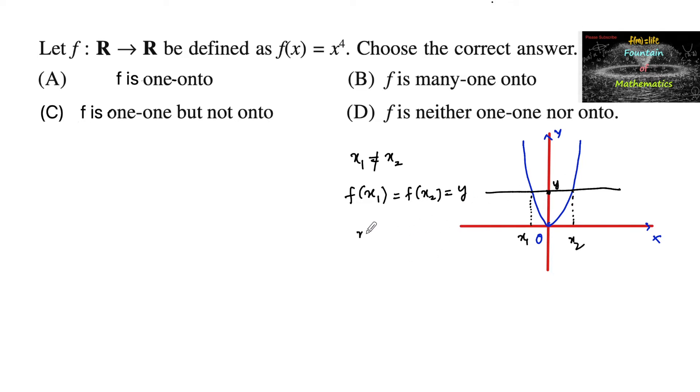Generally we can also verify by taking two real numbers. Minus 2 is not equals to plus 2, but minus 2 to the power of 4 and 2 to the power of 4 both are equal. So f(-2) equals f(2). Two distinct real numbers are getting the same image, hence it's not one-to-one.